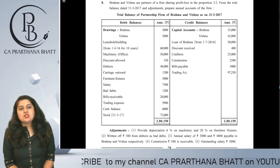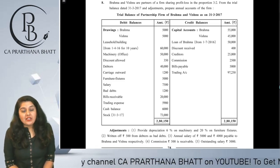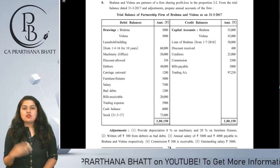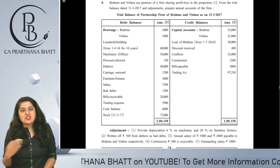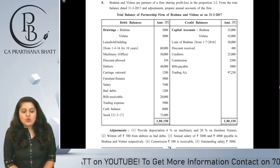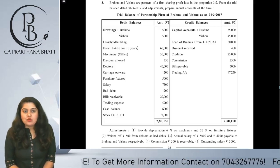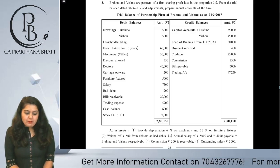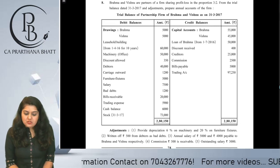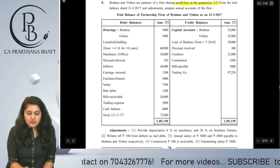Hello friends, today we are going to start with question number eight of your textbook. From each and every session we are going to cover each and every sum given in your textbook. Let's first read the question: Brahma and Vishnu are partners of a firm sharing profits and losses in the proportion of three to two.